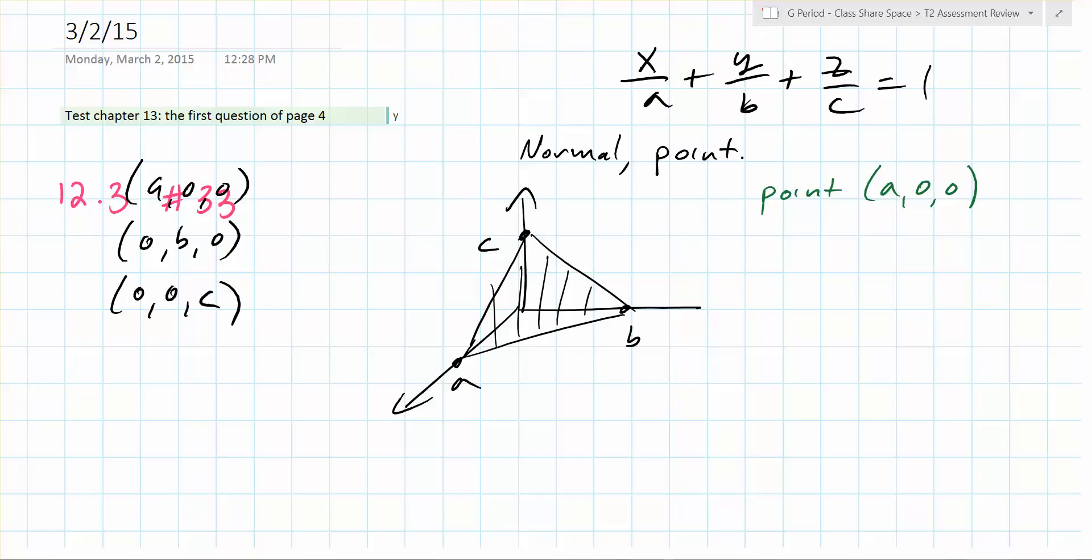Do we have a vector that's on the plane? Yeah, how about we have one vector AB and we have vector AC, right? What is vector AB? So what's the vector from A to B going to be? What is that vector?